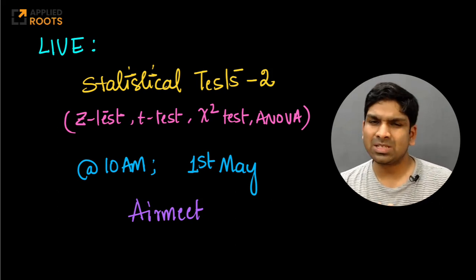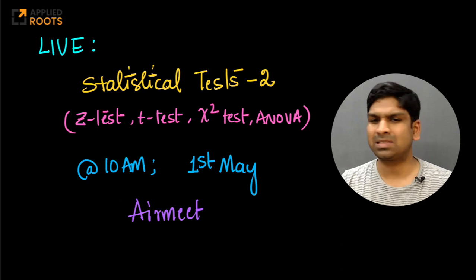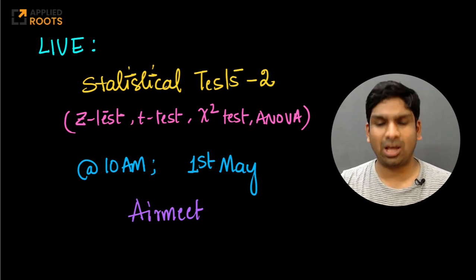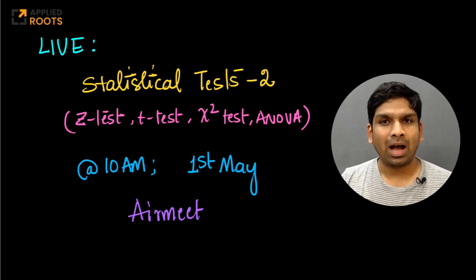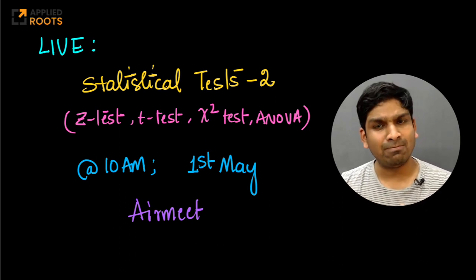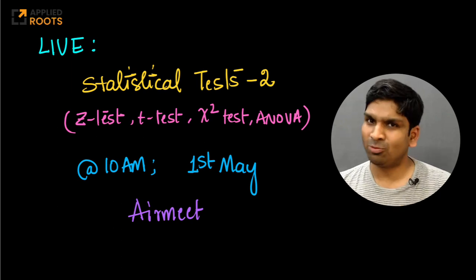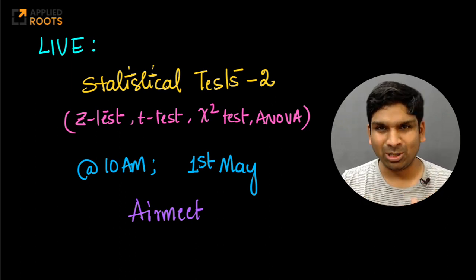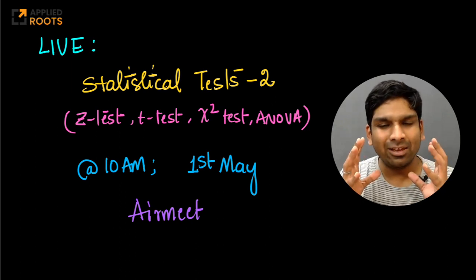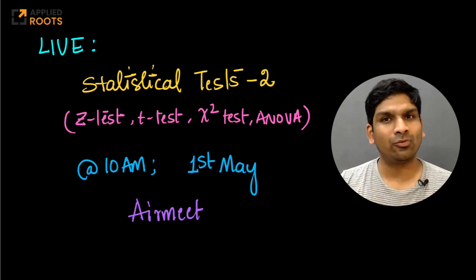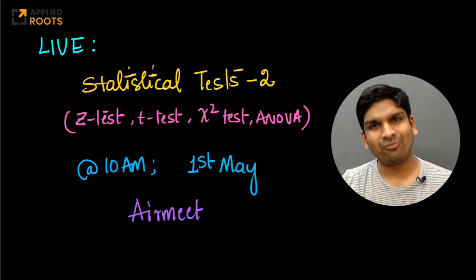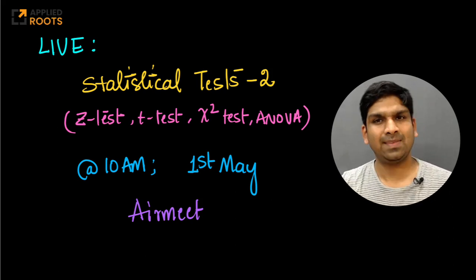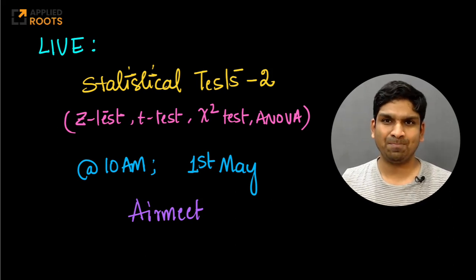We will start with simple Z-test, then T-test, then chi-square test, then ANOVA. I believe that we may not be able to complete everything in one shot. So what we will do is, if we overflow from this session, we will have one more session, which will be Statistical Tests 3 in the coming weeks.